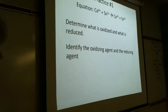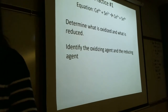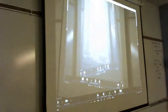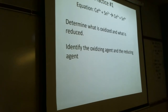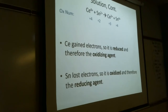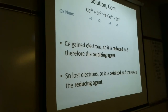Bonus example for your notes: permanganate and oxalate producing manganese(II) and carbon dioxide. Assign oxidation numbers — oxygen is not changing so ignore it. Manganese goes from +7 to +2 — reduced. Carbon is oxidized. Manganese is reduced and carbon is oxidized. The more examples you have in your notes, the better your study tool will be.